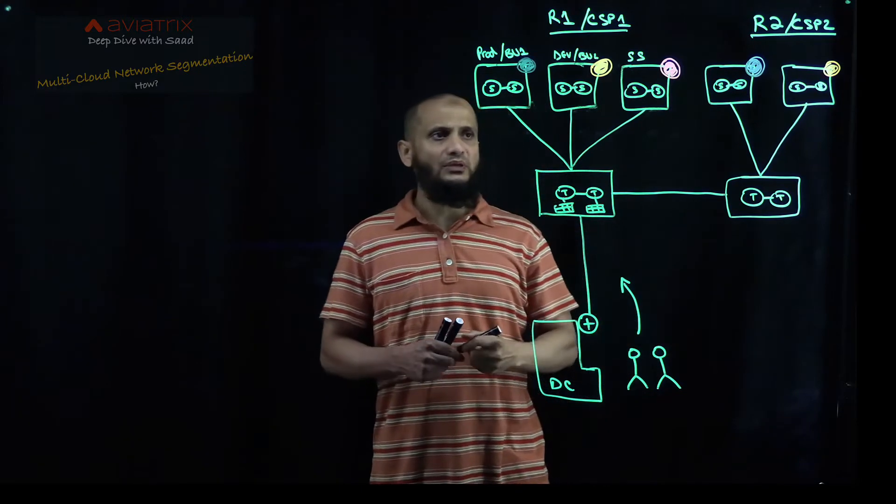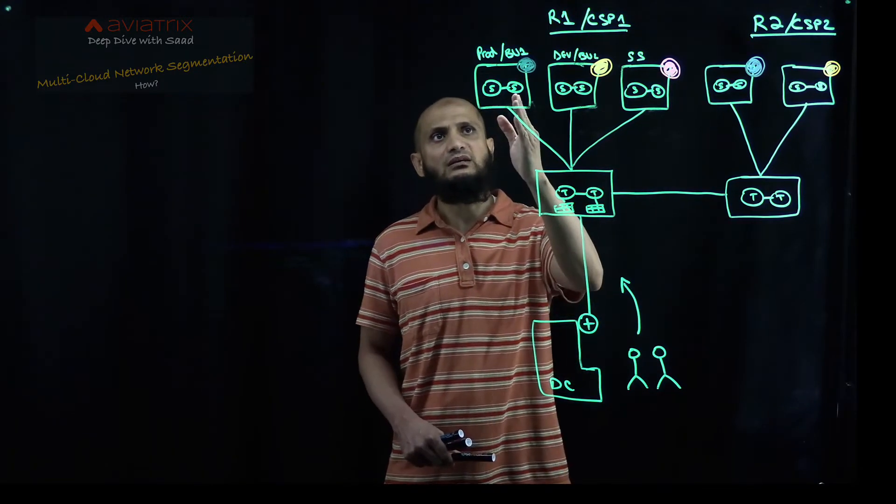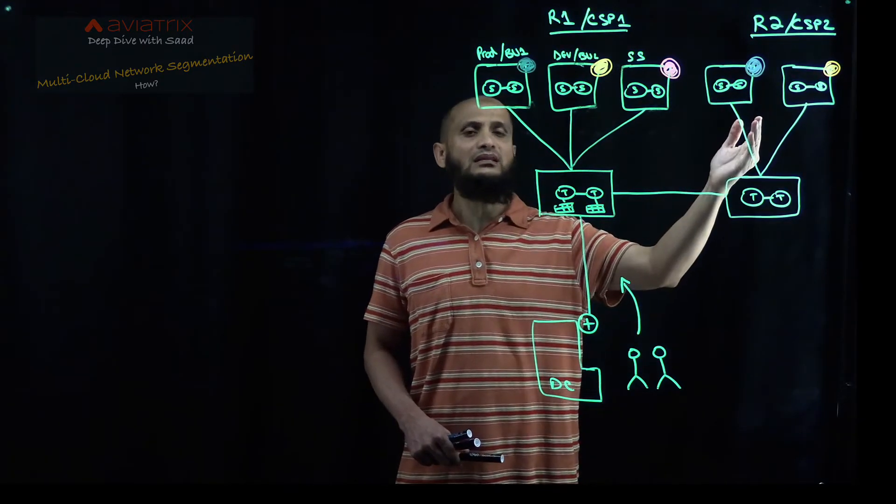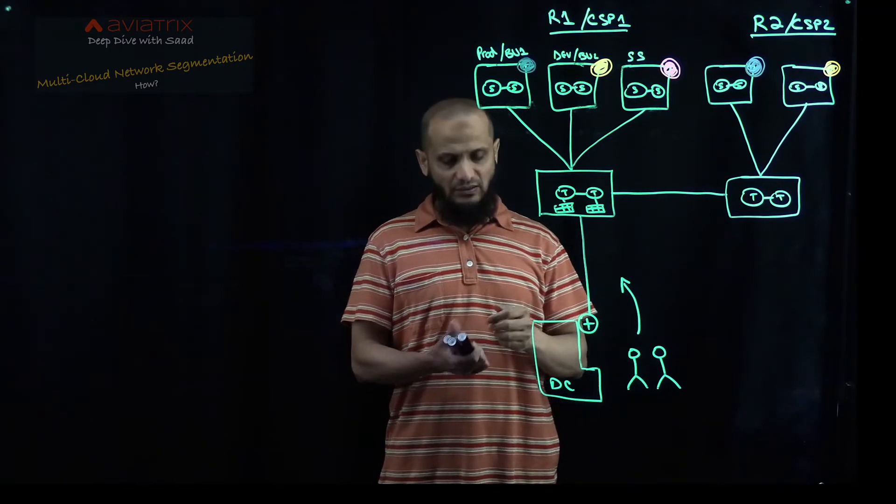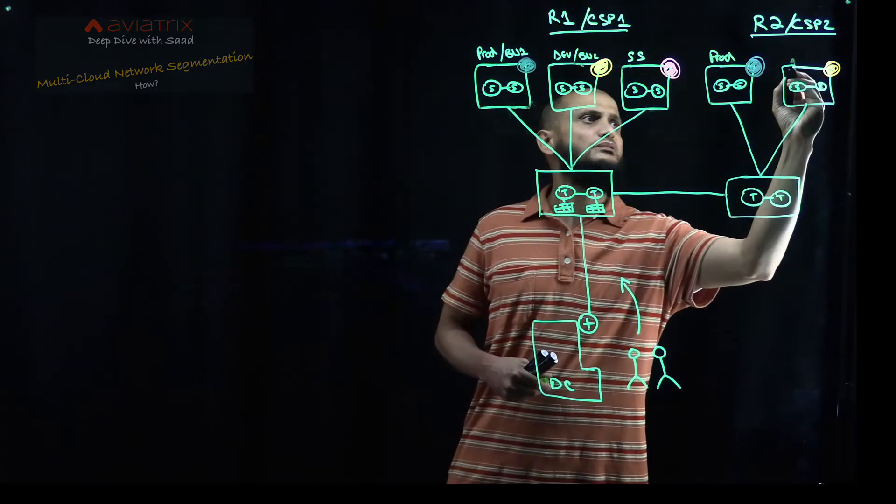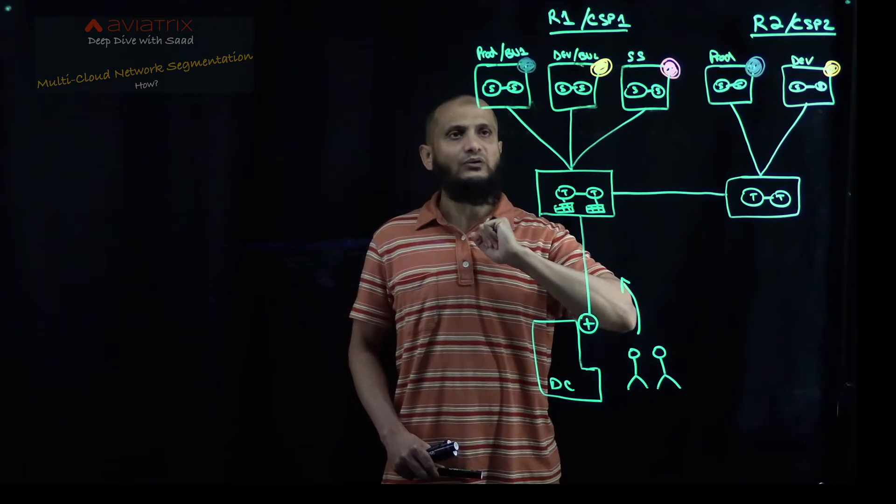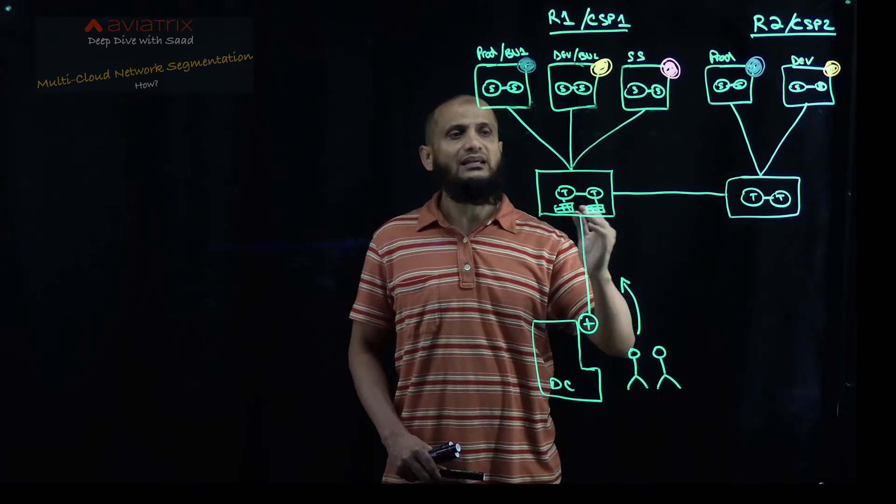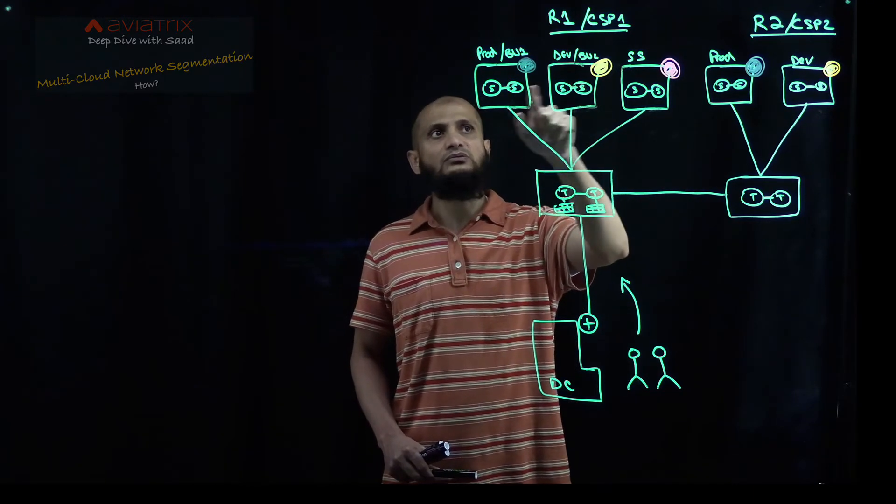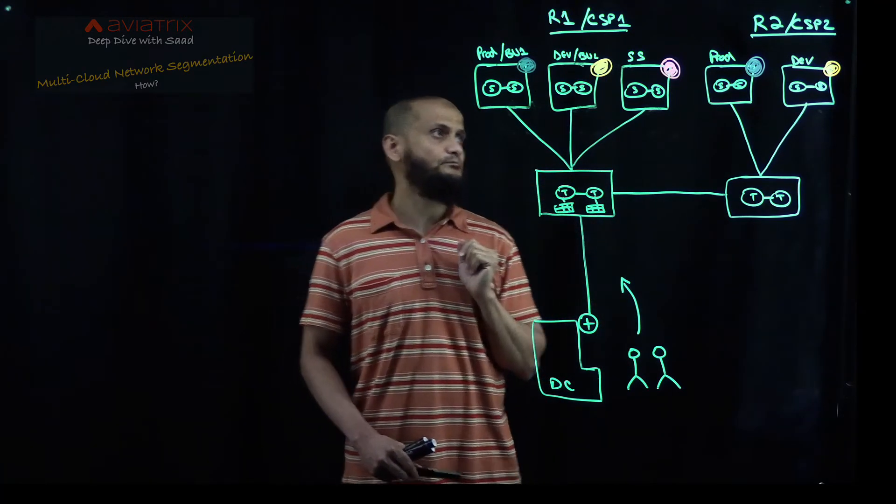So now when you created something like this, then by default, Aviatrix controller knows that this spoke, which is business unit number one or prod one, is basically the same in the other region or other cloud. So it is going to be in this scenario, this is your, again, this is your prod, and this is going to be your dev environment. So these two networks, the cloud networks across regions or across clouds, can communicate with each other through the Aviatrix transit by default. But prod can never talk to the dev because they are placed in a different network domain over here.